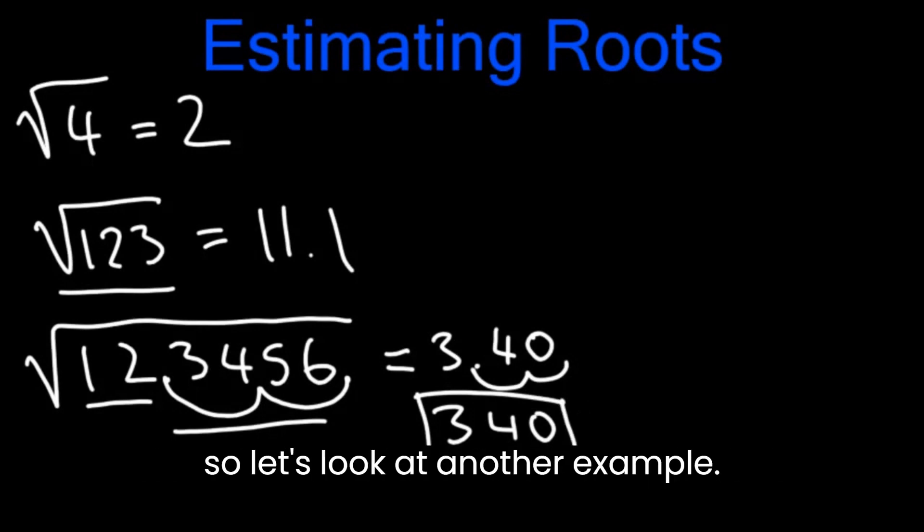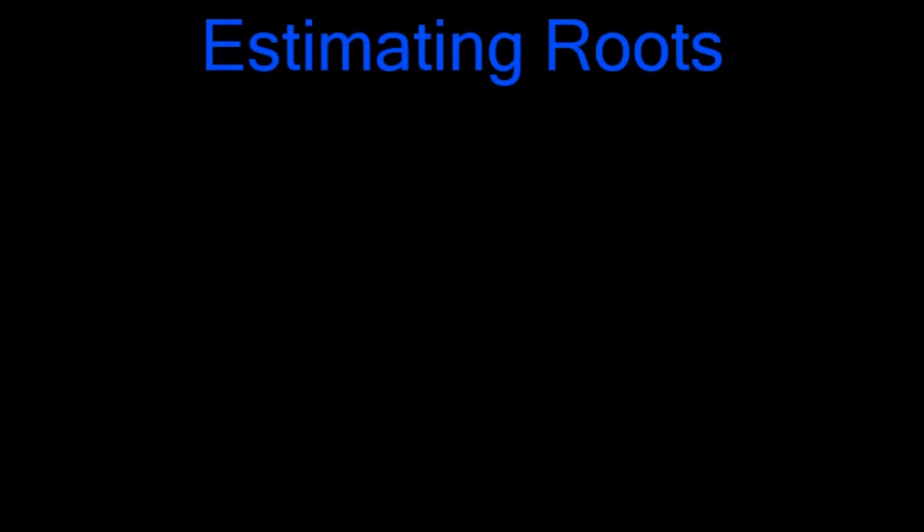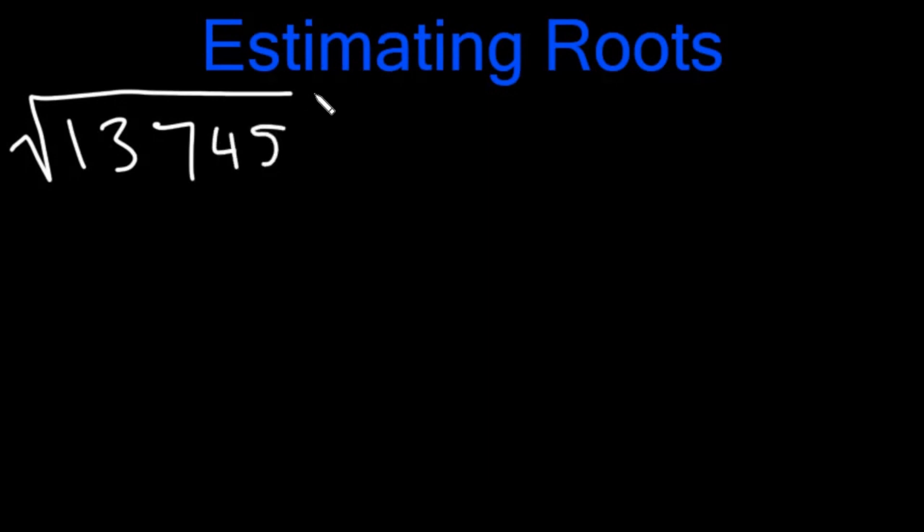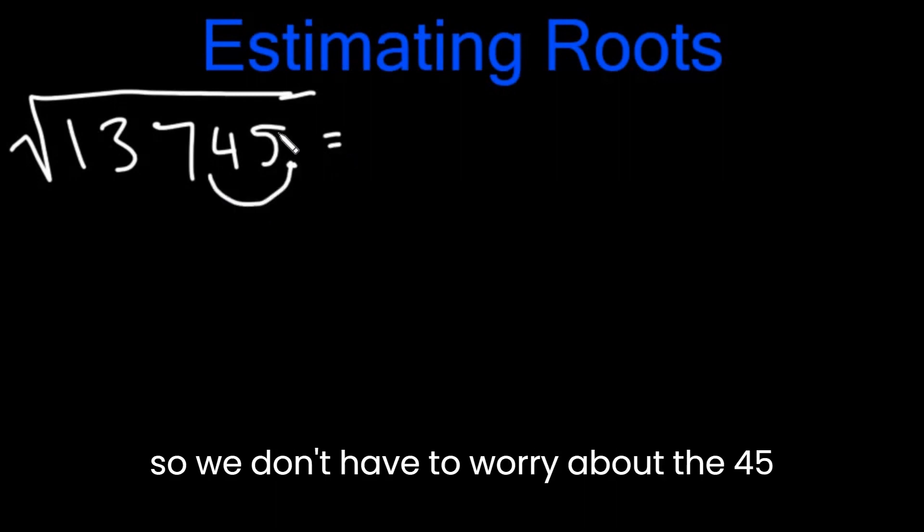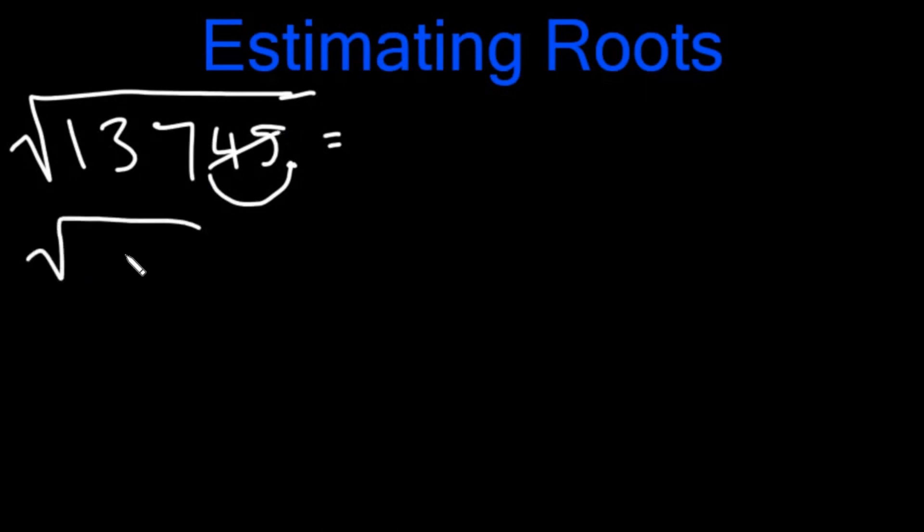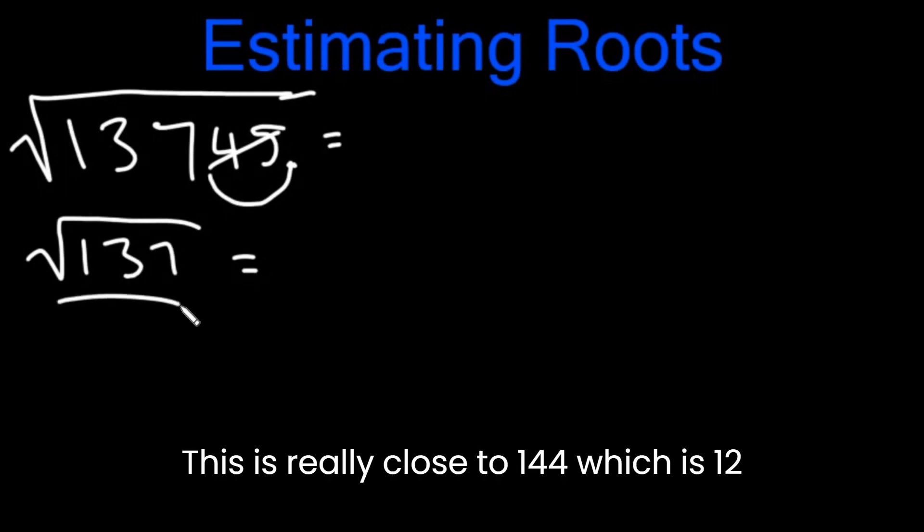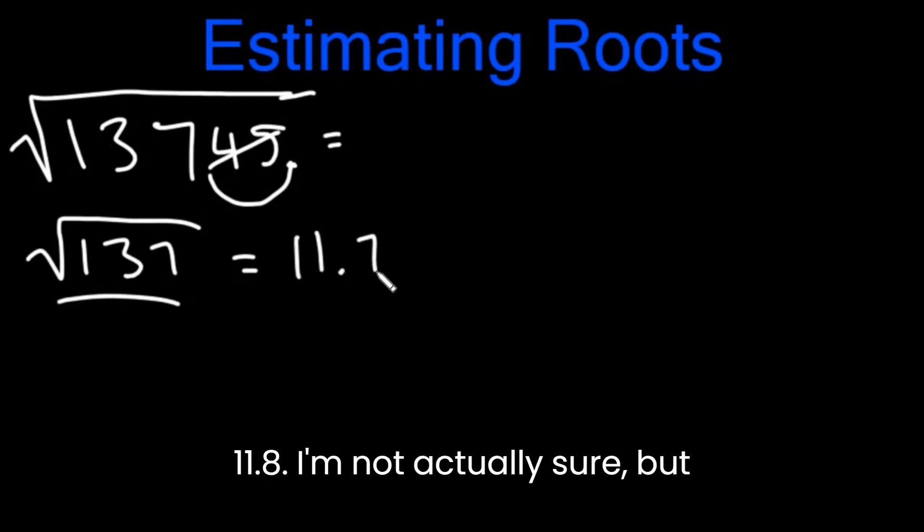I know that was really complicated, so let's look at another example. Let's say we have square root of 13745. Finding the square root of this would be really difficult. So again, we're going to take away two of the numbers, so we don't have to worry about the 45 at all. We just have to find square root of 137. This is really close to 144, which is 12 squared, and it's quite a bit far away from 11 squared, 121. So it has to be around, we'll say 11.7 or 11.8. Let's just say it's 11.7.